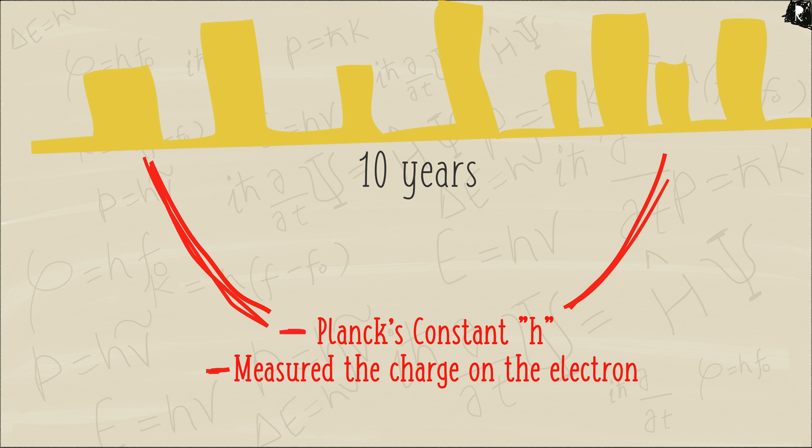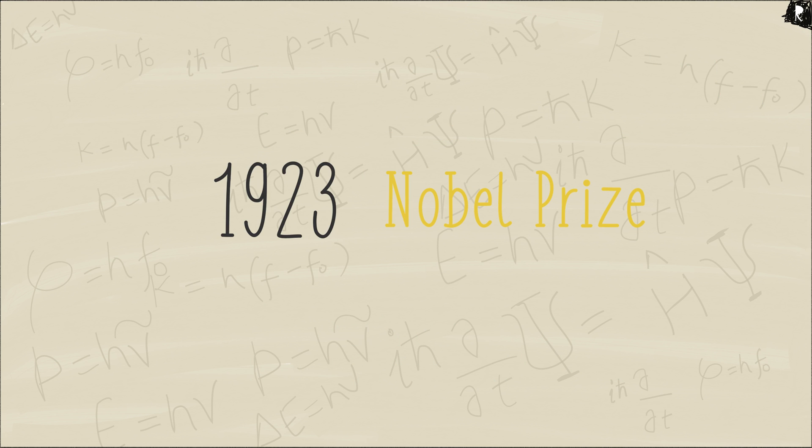To complete the irony, in 1923, he also received the Nobel Prize for his discoveries, his work on the elementary charge of electricity and on the photoelectric effect.